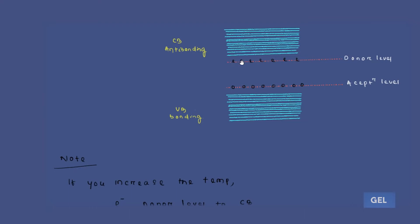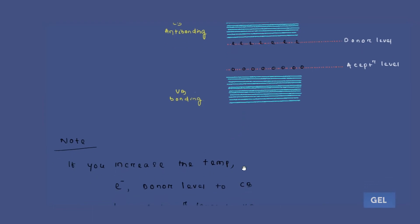If you increase the temperature above 0K, the electron goes into the conduction band. In the case of a p-type semiconductor, if you increase the temperature above 0K, those holes will start moving towards the valence band. This process is called either donor level ionization or acceptor level ionization.